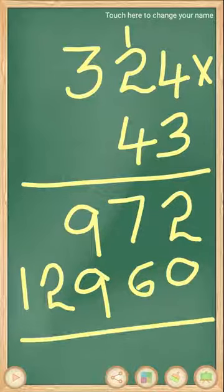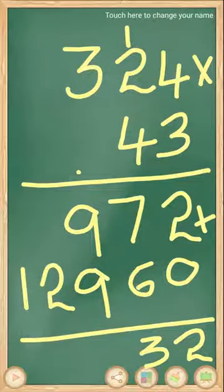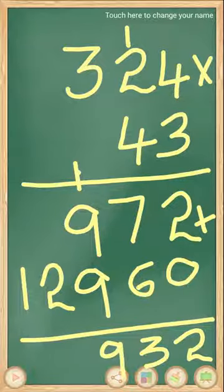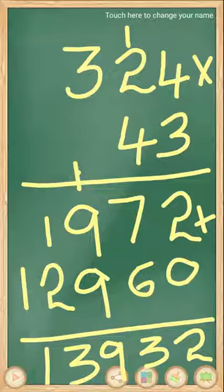Then you add all these numbers. 2 plus 0 equals 2, 7 plus 6 equals 13, carry 1, then 9 plus 9 equals 18, plus 1 equals 19, carry 1, 2 plus 1 equals 3, then 1 here. So the answer is 13,932.